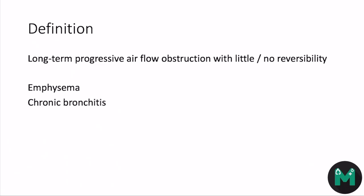Emphysema is a condition in which there's abnormal air in the tissues after the terminal bronchioles. This causes destruction of the alveoli, and they can join together to form bullae, which can rupture and cause a pneumothorax. There's a significant association between heavy cigarette smoking and emphysema.